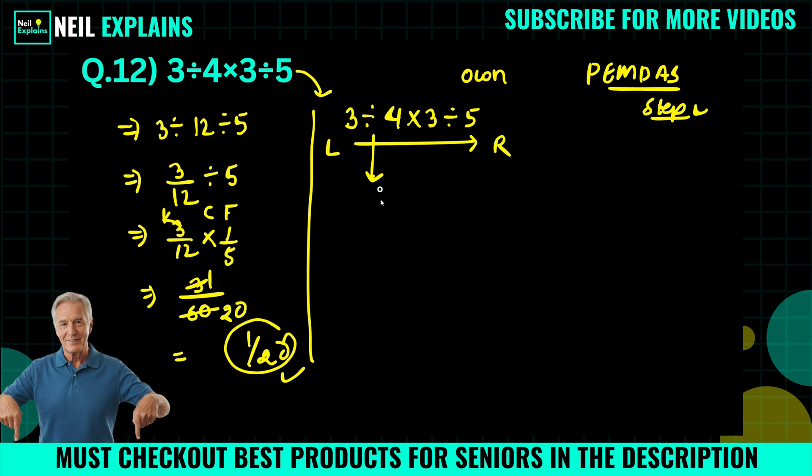So to simplify this, we can also write like this: 3 divided by 4 times 3 divided by 5. Now this operation is done.